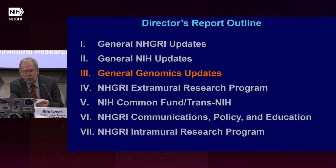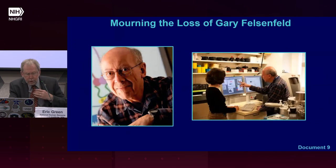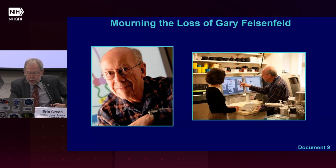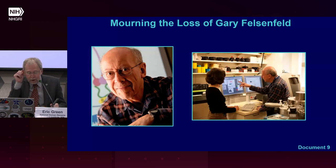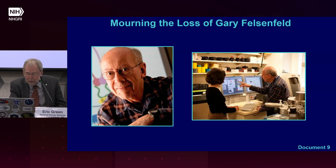Moving on to general genomics updates, starting on a sad note: Gary Felsenfeld, a good friend and relative of NHGRI, passed away earlier this month. Gary was a highly accomplished researcher who made major contributions to our understanding of the relationship between chromatin structure and gene expression. Before retiring, he was for many years a section chief in the laboratory of molecular biology at the National Institute of Diabetes and Digestive and Kidney Diseases. He truly enjoyed working at NIH, training postdoctoral fellows, and remaining invested in science. After retirement, he enjoyed photography and spending time with his family, including NHGRI program director Adam Felsenfeld.